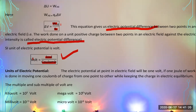One volt is defined as follows: the electric potential at a point in an electric field is one volt when one joule of work is done on a one-coulomb charge, moving it from one point to another while keeping it in electrostatic equilibrium. So one volt equals one joule per coulomb.